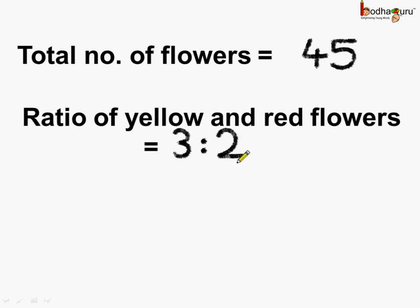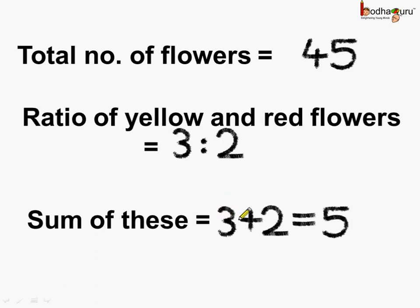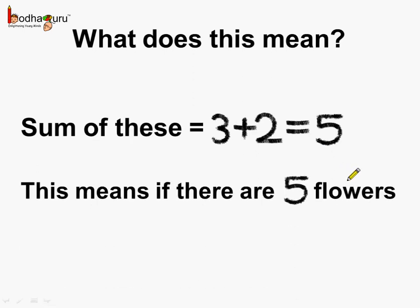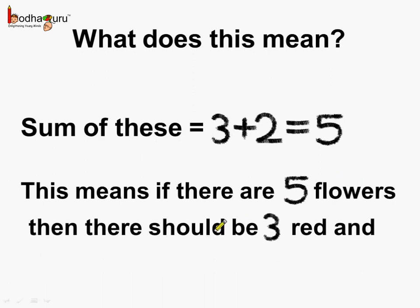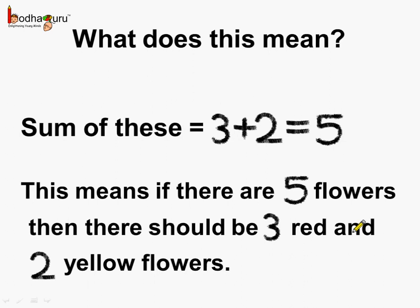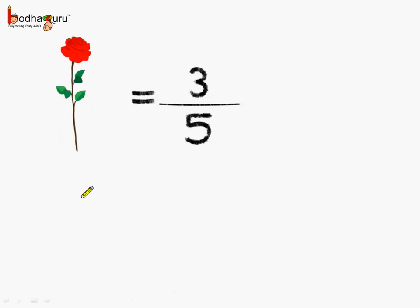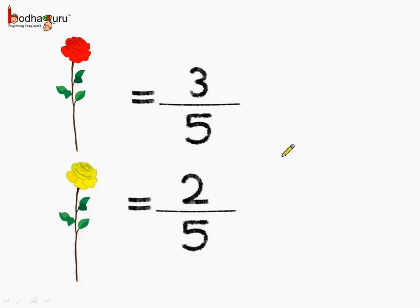3 and 2 are the two terms of the ratio. Let us add these terms — 3 plus 2 is equal to 5. This means that if there were 5 flowers, then there should be 3 red and 2 yellow flowers. We can also say: if there were 5 parts, then 3 parts are red and 2 parts would be yellow. So red flowers represent 3 by 5, and yellow flowers represent 2 by 5 of the total.